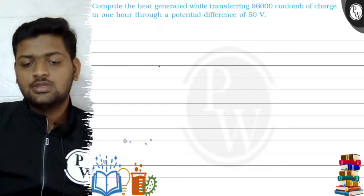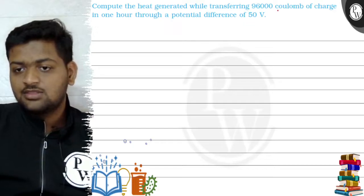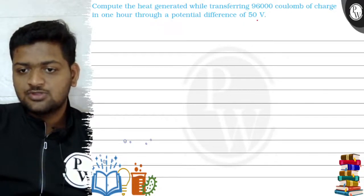Hello Achyo, let's see this question. Compute the heat generated while transferring 96,000 coulomb of charge in one hour through a potential difference of 50 volt.